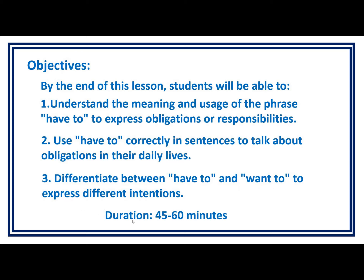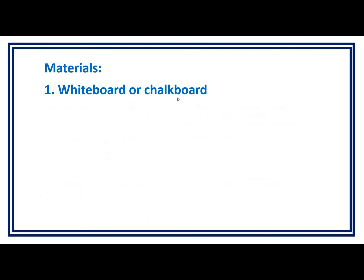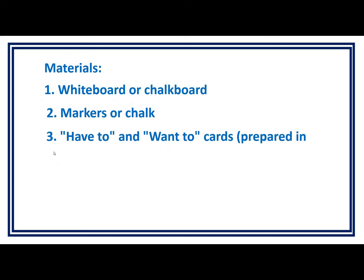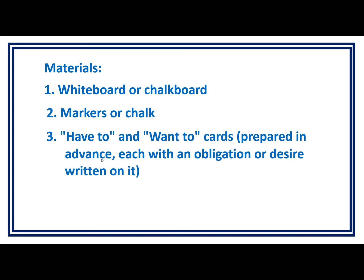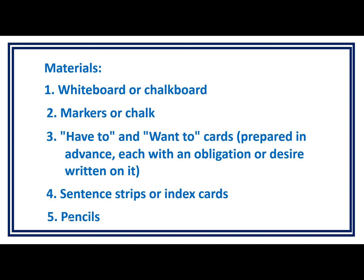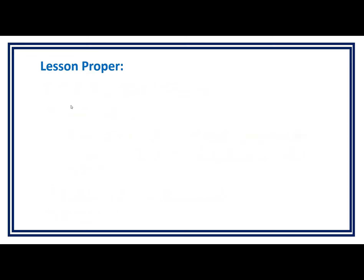This lesson has a duration of about 45 to 60 minutes. Materials needed: 1. Whiteboard or chalkboard. 2. Markers or chalk. 3. 'Have to' and 'want to' cards prepared in advance, each with an obligation or desire written on it. 4. Sentence strips or index cards. 5. Pencils.